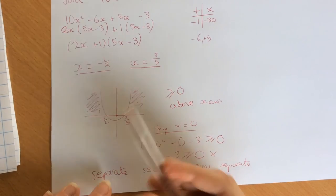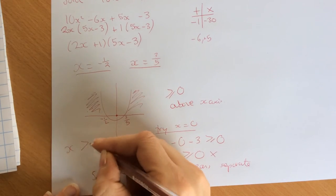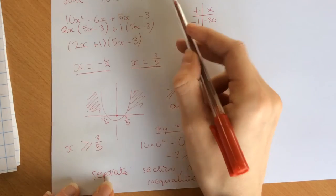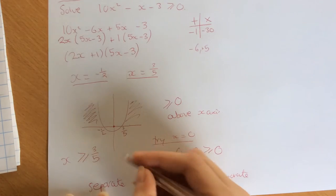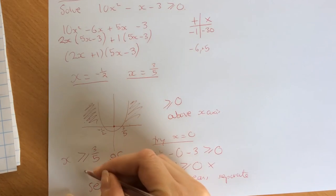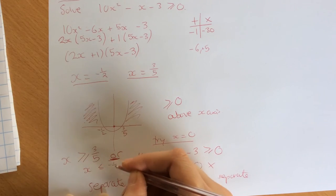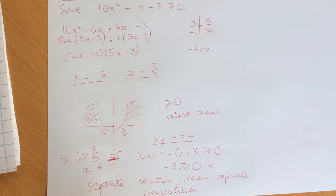So our final answer is x is going to be greater than or equal to 3 fifths, because that's the sign that we used up here. Or, important word there, you must put the or in, x is less than or equal to minus a half.